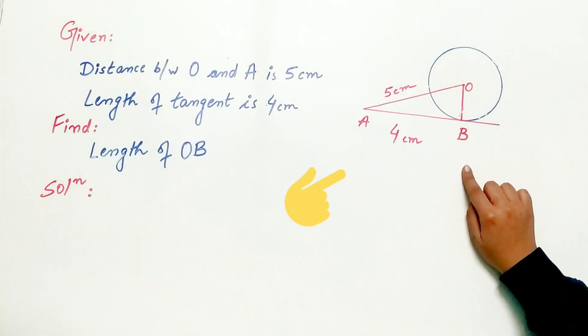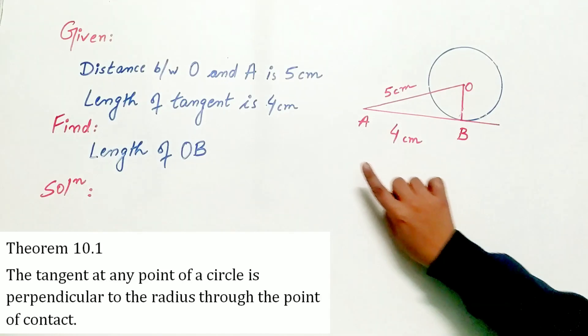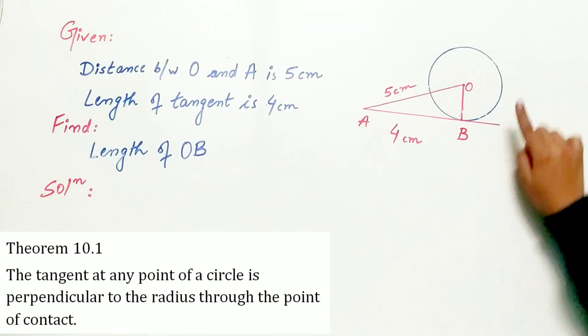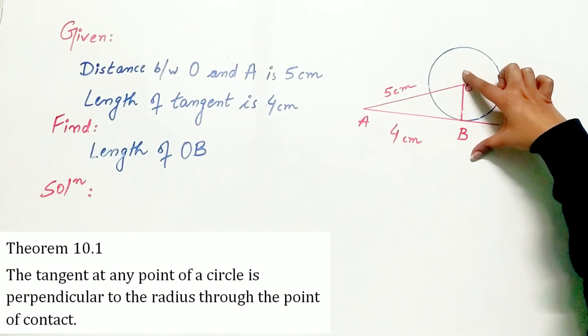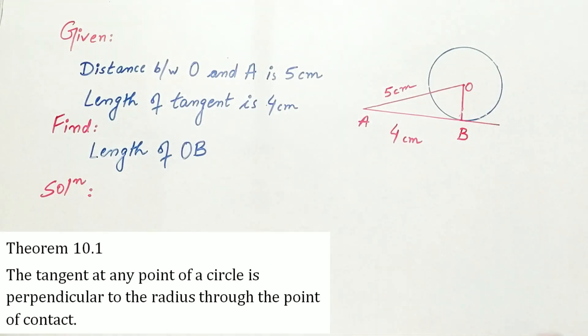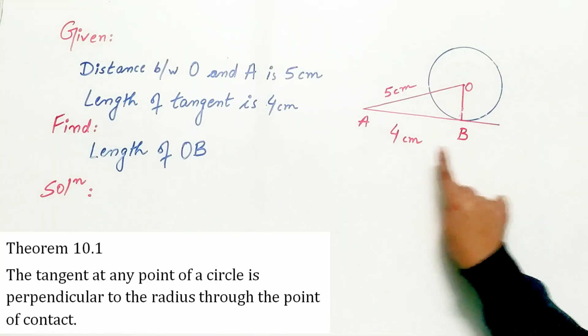Now look carefully. Remember theorem 10.1? It says the tangent at any point of a circle is perpendicular to radius through the point of contact. That means OB is perpendicular to AB.